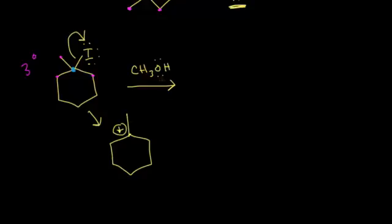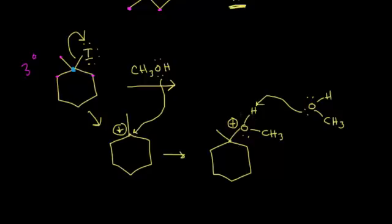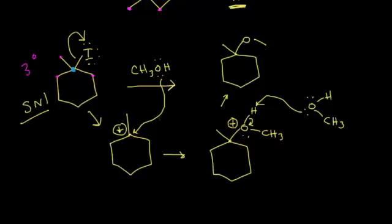The next step is nucleophilic attack: a lone pair of electrons on methanol attacks the carbocation. The oxygen is now bonded to that carbon, with a hydrogen, a methyl group, and a lone pair remaining — giving the oxygen a +1 formal charge. In the last step, another methanol molecule functions as a base, taking that proton, and the electrons kick onto the oxygen to give the final product: an oxygen with a methyl group. Looking at the product, there are no chirality centers, so we don't need to specify any stereochemistry — this is the only product.